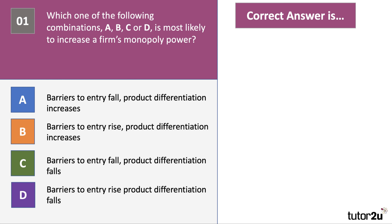Here's our first question: which one of the following combinations A, B, C, or D is most likely to increase a firm's monopoly power? Take a look through the options here. They all refer to barriers to entry and the depth of product differentiation, and choose the option which might increase the firm's monopoly power.